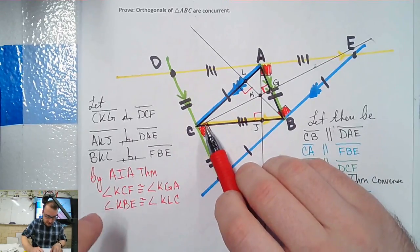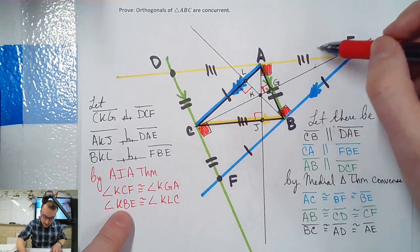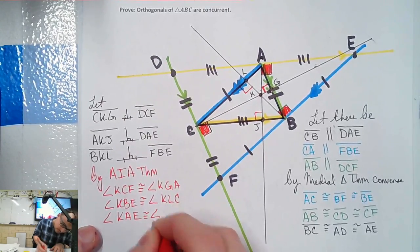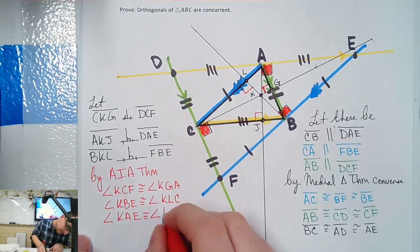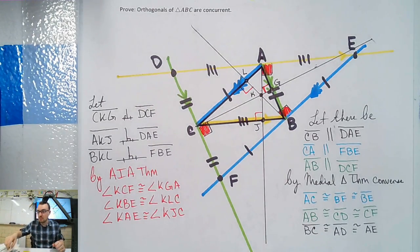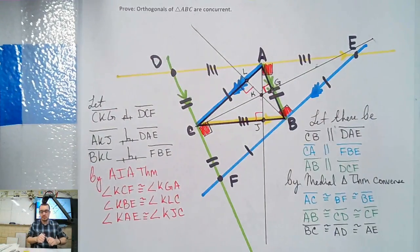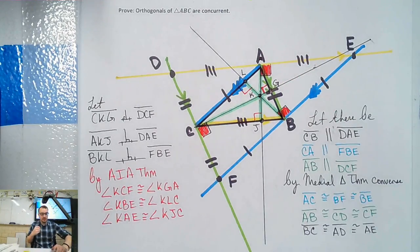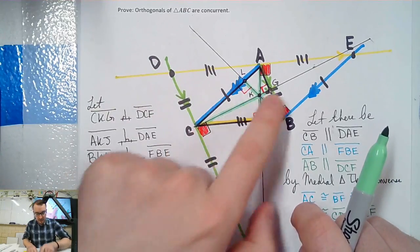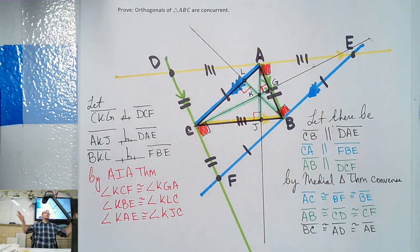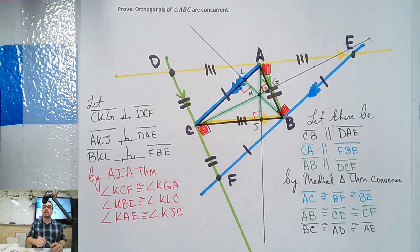And the last one: angle K, A, E is congruent to angle K, J, C. Now by definition, B, K, L and C, K, G and A, K, J are orthogonals — vertex to 90. So I could write: by definition, A, K, J is an orthogonal; C, K, G is an orthogonal; B, K, L is an orthogonal. And they all have K in them, so they must intersect at K — therefore they're concurrent. So our last thing we write is: therefore, the orthogonals of triangle ABC are concurrent.